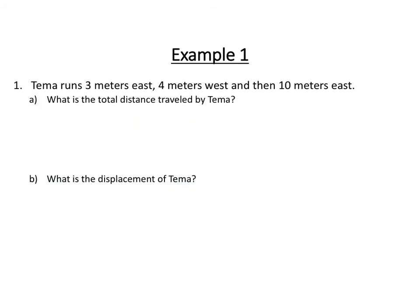All right, so Tema runs three meters east, four meters west, and then ten meters east again. What's the total distance traveled by Tema? All right, so if you'll remember, distance is a scalar quantity, so we don't really care about the direction. I like to sketch things. So first, Tema runs east, so this is east. She does that three meters.